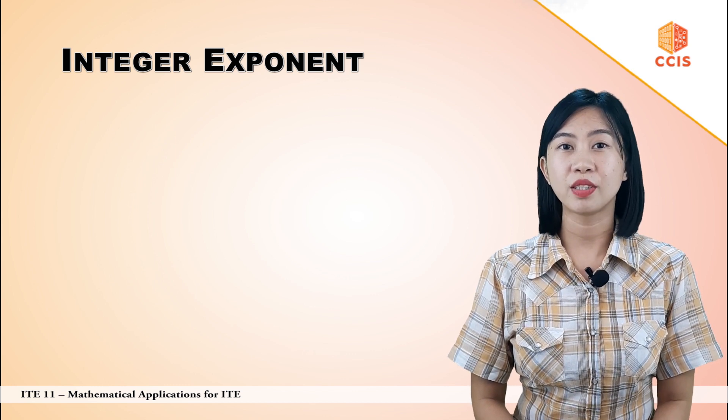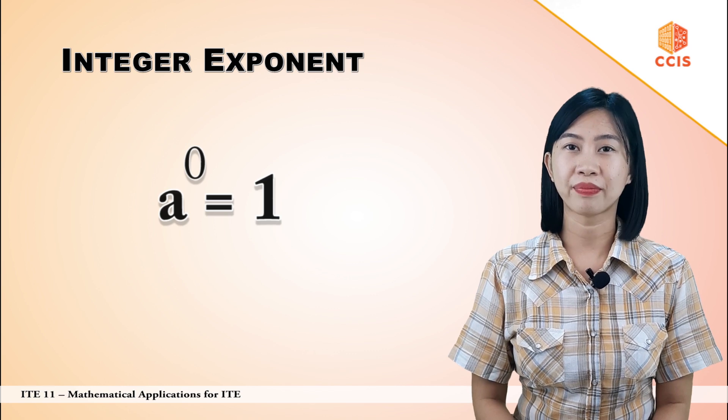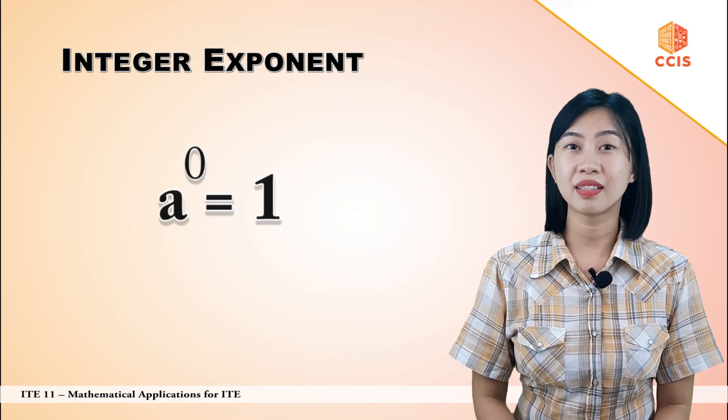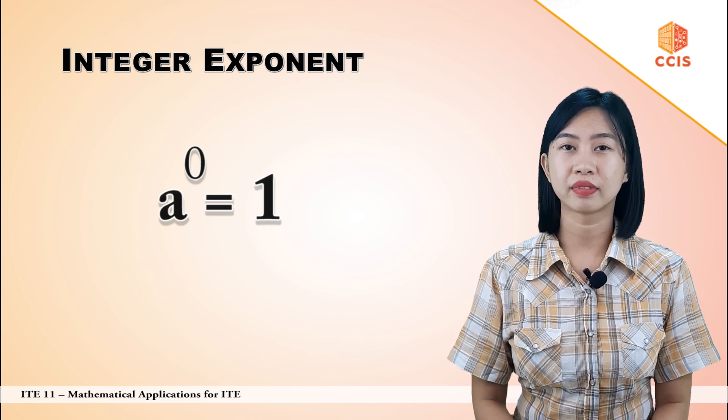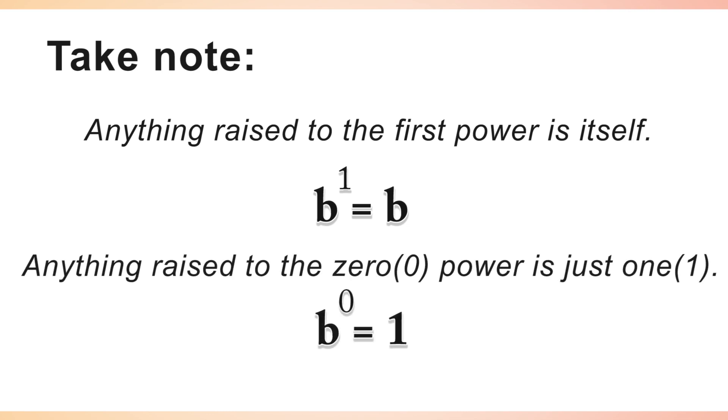Also, any base with exponent 0 is always equal to 1, provided that the base is not equal to 0. Take note that anything raised to the first power is itself and anything raised to the 0 power is just 1.